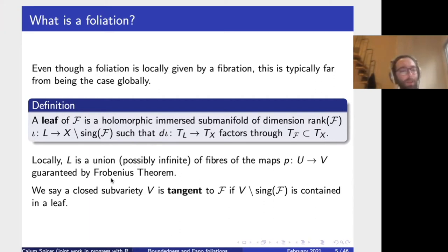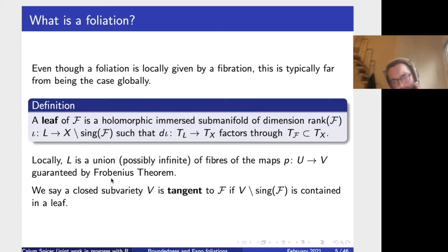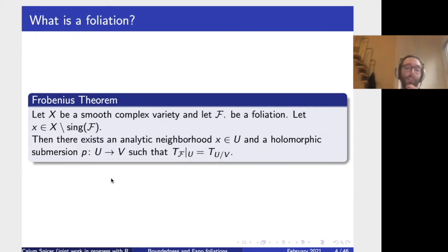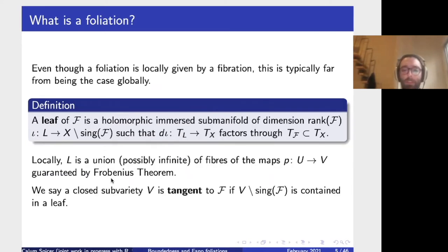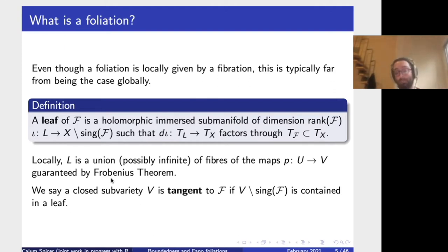A leaf of a foliation is a holomorphic immersive manifold whose dimension equals the rank of the foliation, and such that the differential on the tangent bundle of the leaf factors through the tangent sheaf of the foliation. A leaf locally is just a union of fibers of the holomorphic submersion given by Frobenius' theorem — it's an orbit of the differential equations defining the foliation. We say a closed subvariety V is tangent to F if, away from the singular locus, V is contained in a leaf. Now let's look at some examples.